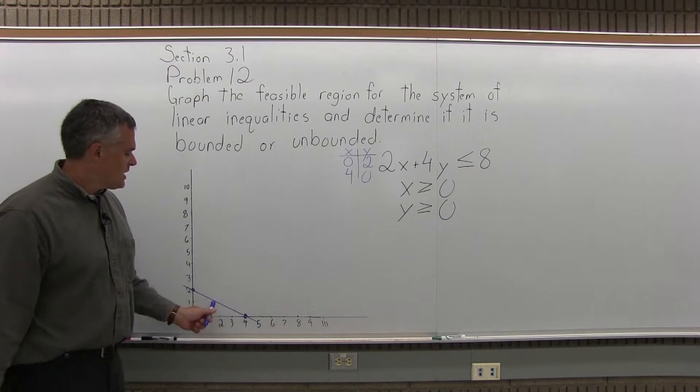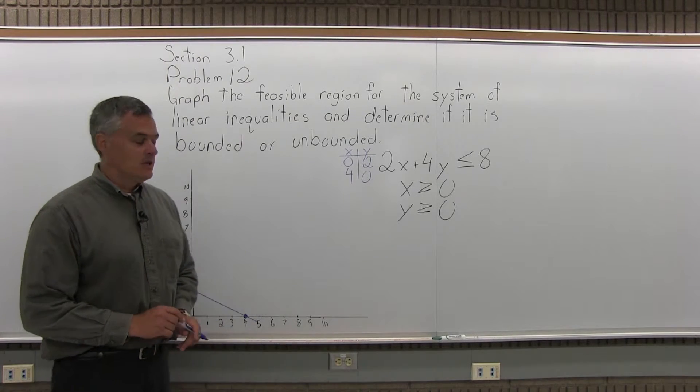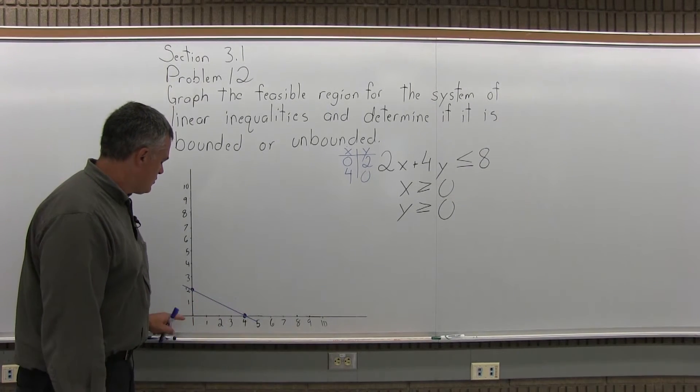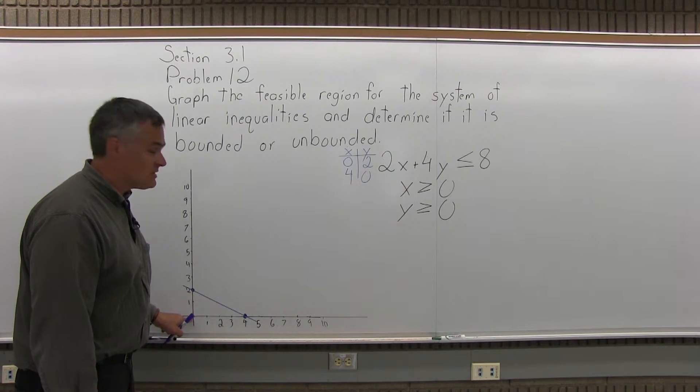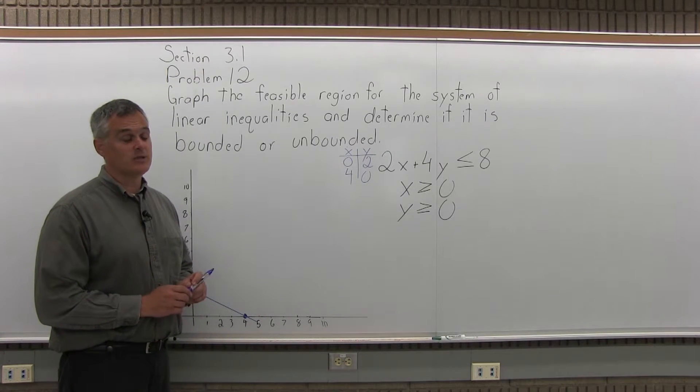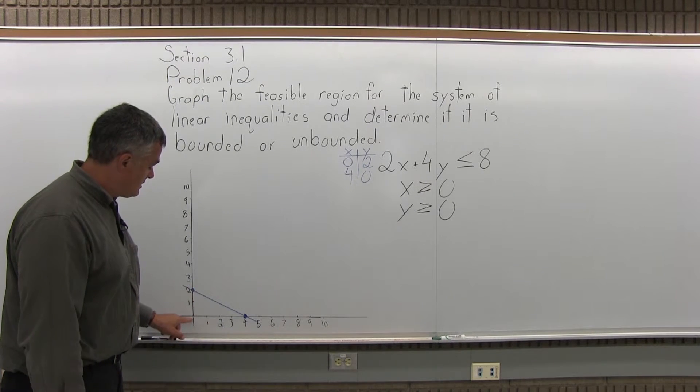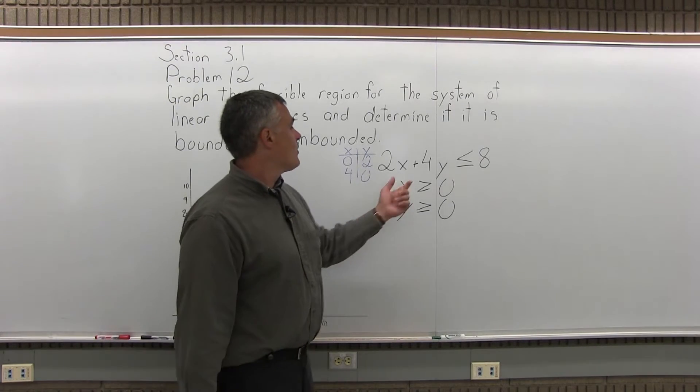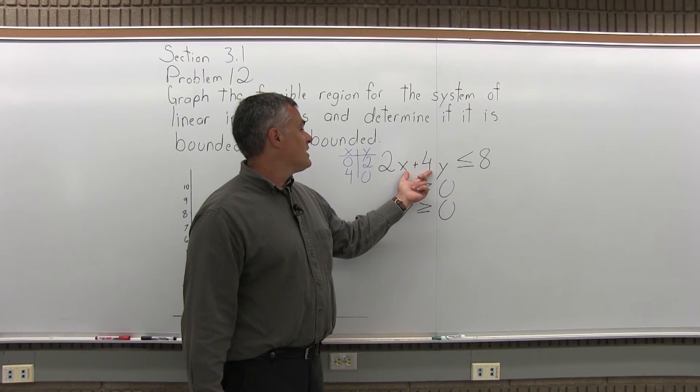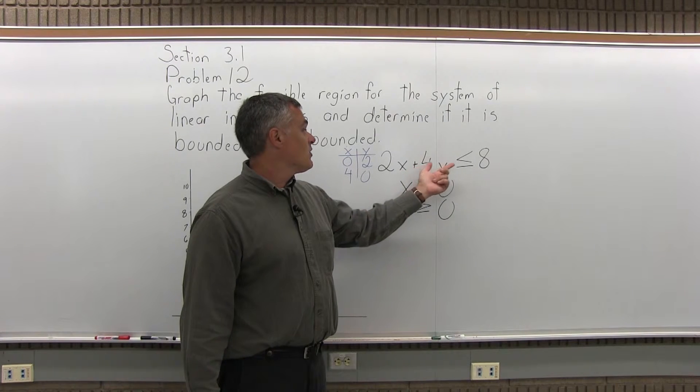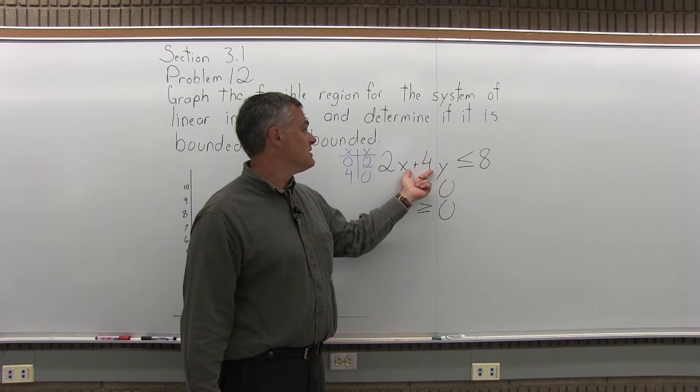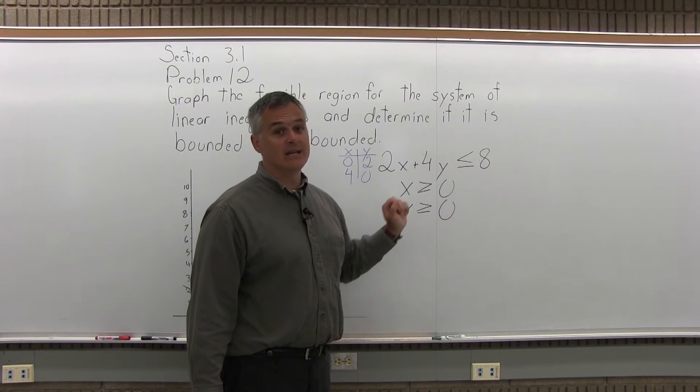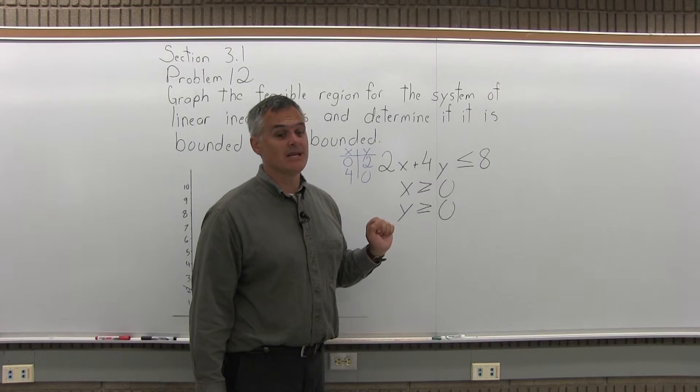Now I have to determine which half of that graph I shade. Is it above or underneath? To do that, I'm going to use my test point. I choose a test point that's not on the line. I always say, use 0, 0 if you can. 0, 0 is not on the line. So I'll use 0 for x, 0 for y. The result, I will get the left side of my inequality, zeros out completely, and I wind up with 0 is less than 8, which is true, 0 is less than 8.